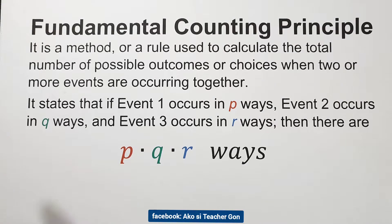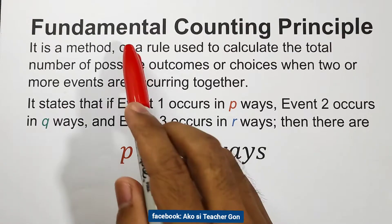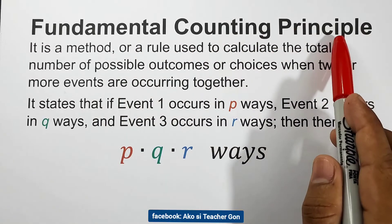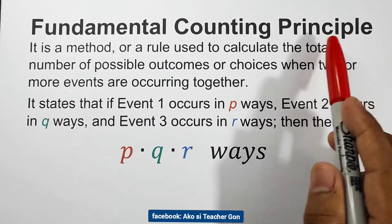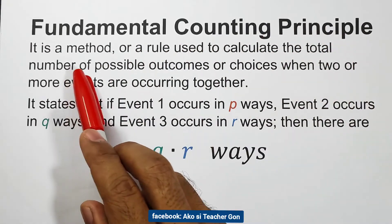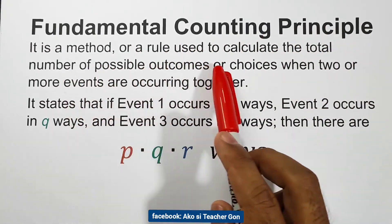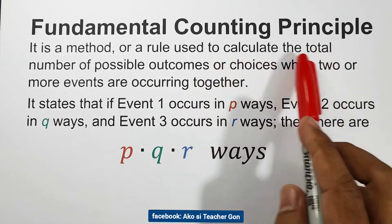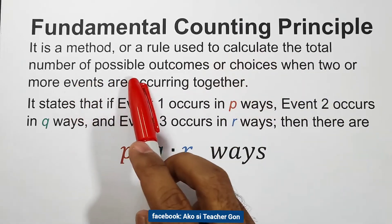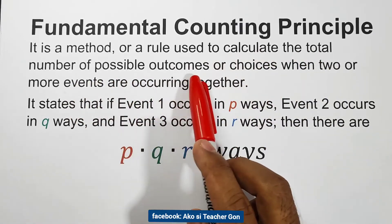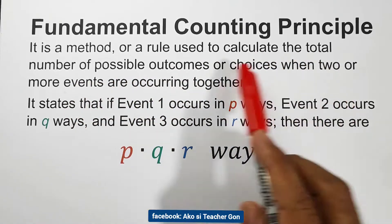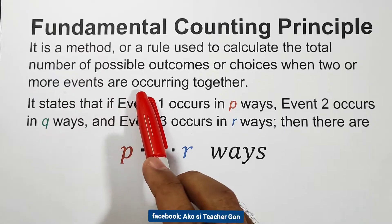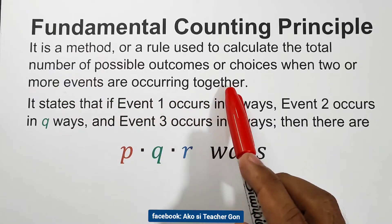Hello everyone! In this video, we will talk about the fundamental counting principle. Based on the definition, it is a method or rule used to calculate the total number of possible outcomes or choices when two or more events are occurring together.